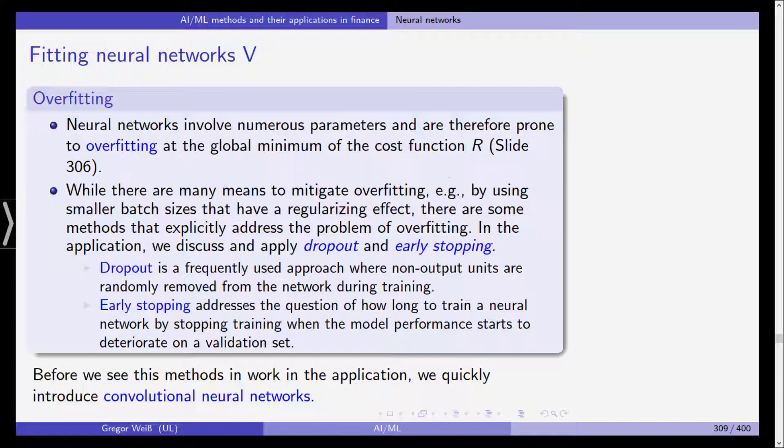Remember that a huge problem with neural networks is because of this huge number of parameters, we have a huge flexibility, overfitting becomes a huge problem. So we have numerous parameters and neural networks are prone to overfitting at the global minimum of the cost function.